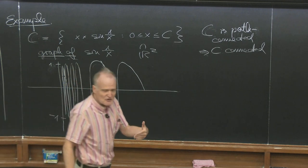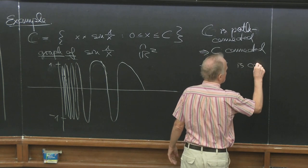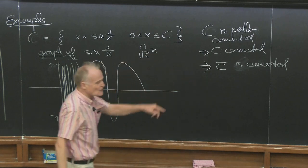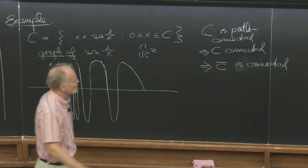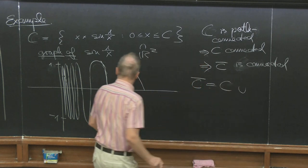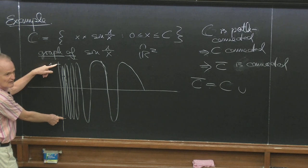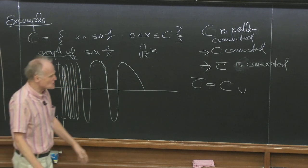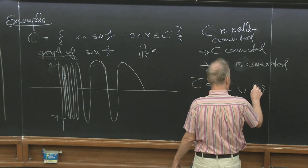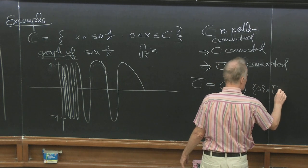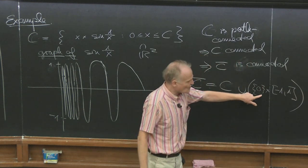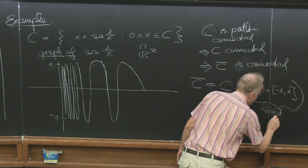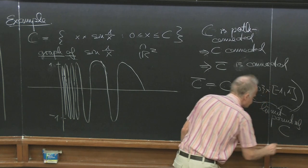This implies that also the closure is connected — the closure of a connected set is connected. What is C-bar? C-bar is C union the limit points. From the picture it's clear you have to add these points. Every neighborhood here intersects C. The limit points of C are the set 0 × [−1, 1].